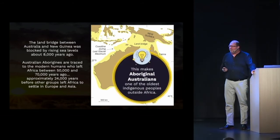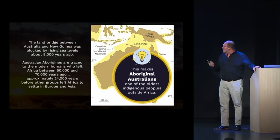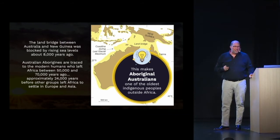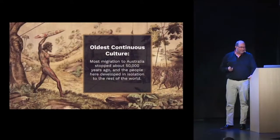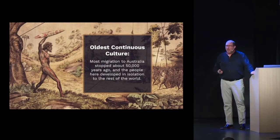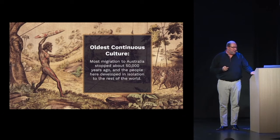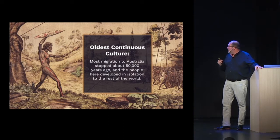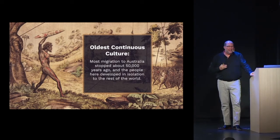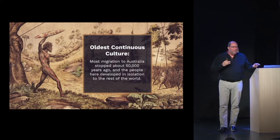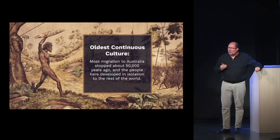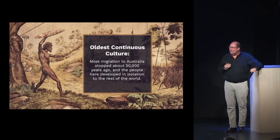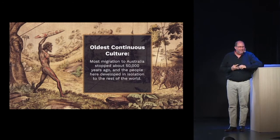This makes Aboriginal Australians one of the oldest indigenous peoples outside of Africa. They are also remarkable because they have the oldest continuous culture. Migration to Australia stopped about 50,000 years ago, and the people here developed in isolation from the rest of the world.